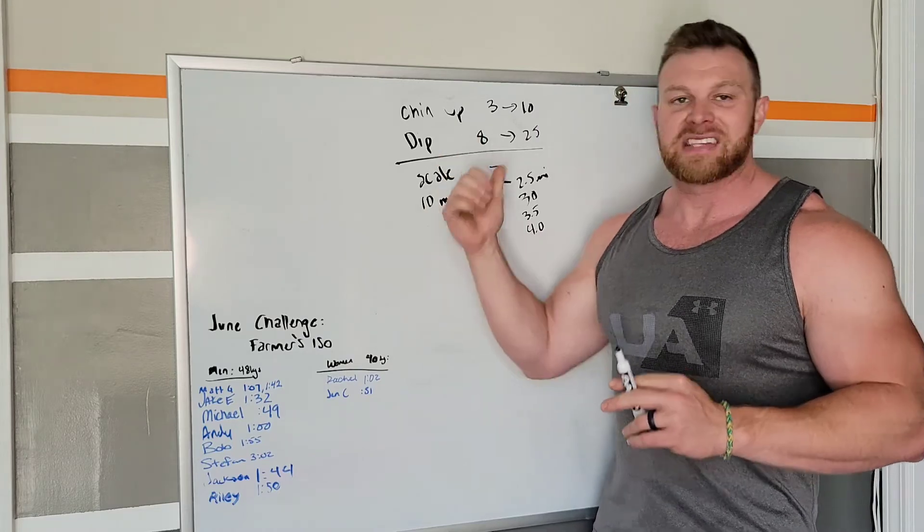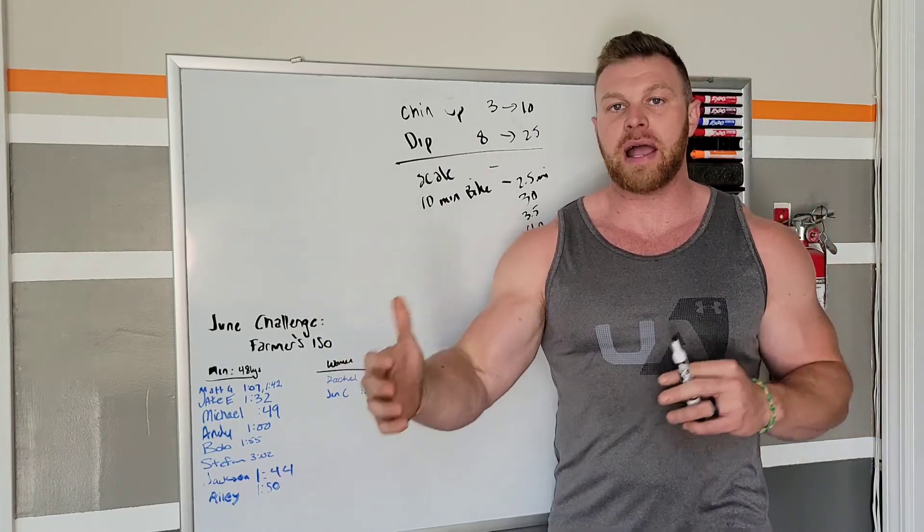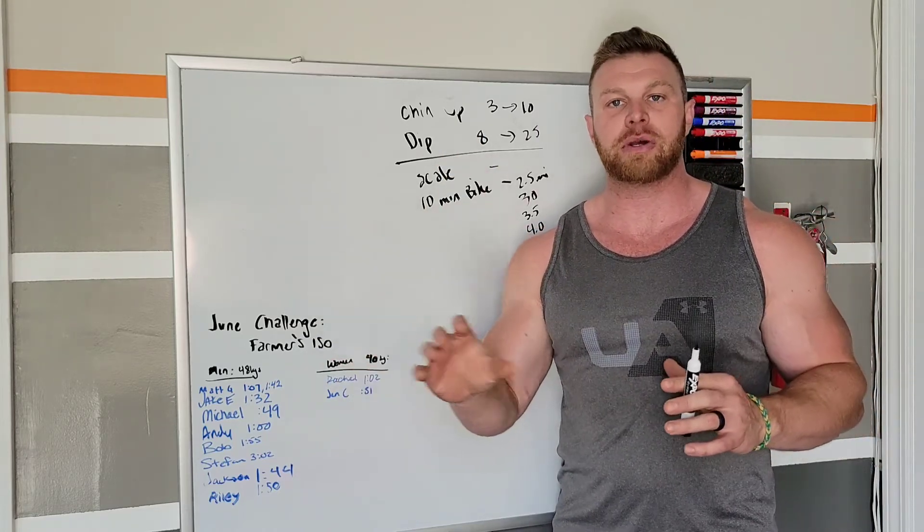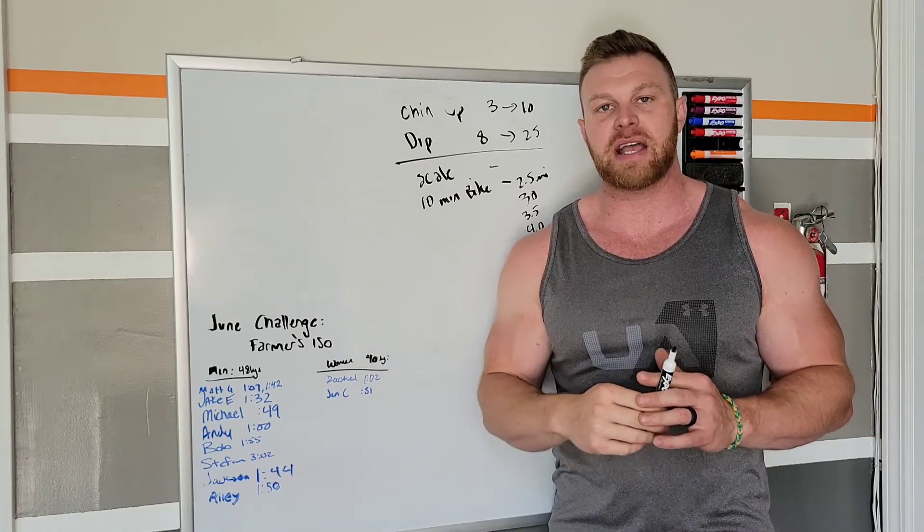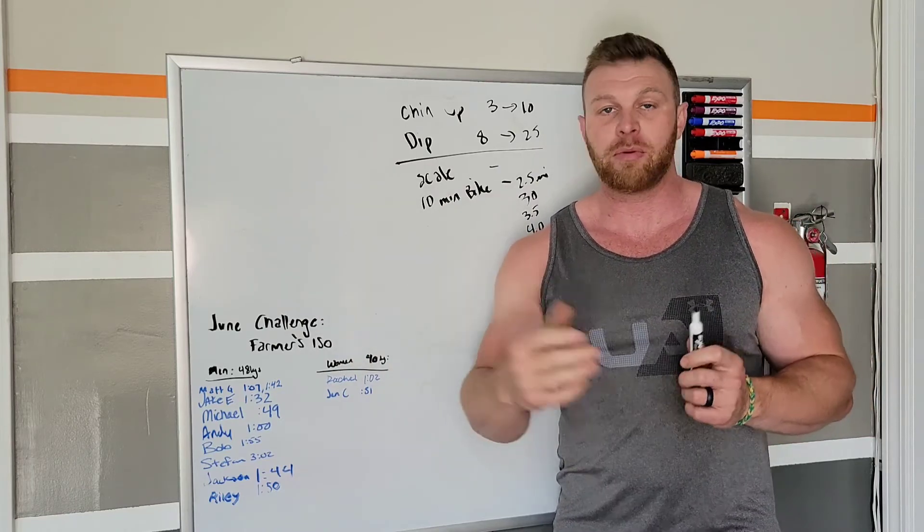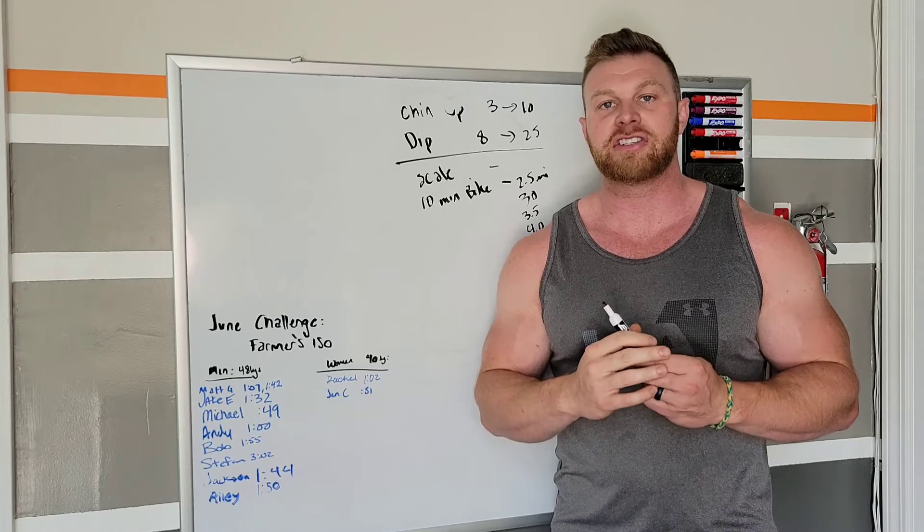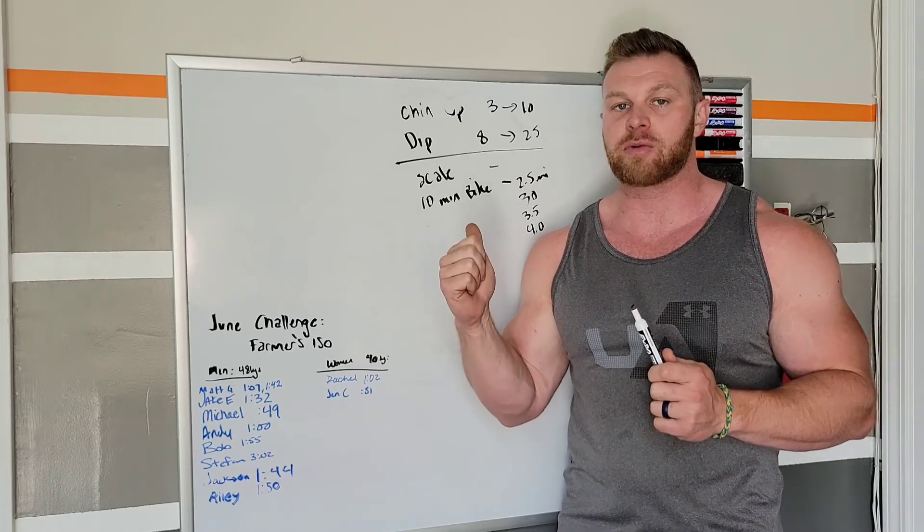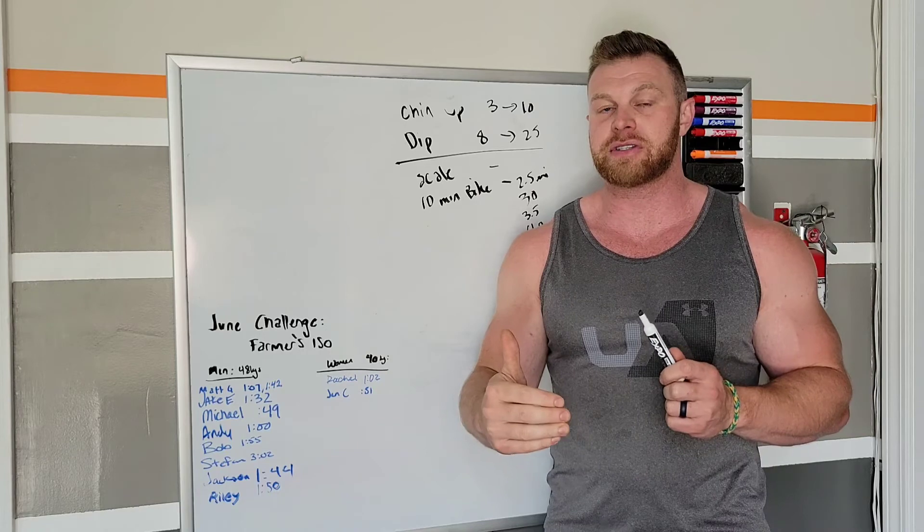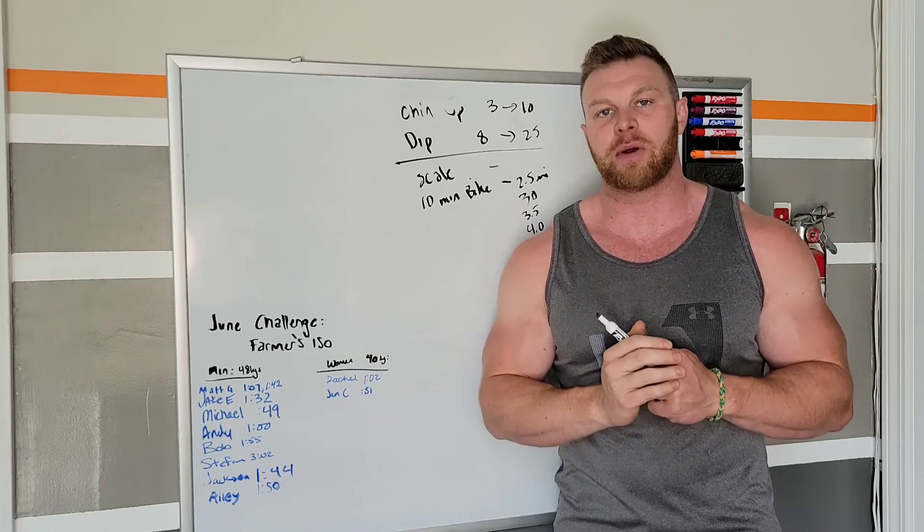Set up some numbers for yourself. See where you're at. Pick whatever your goals are and how you can attribute to it. Then use those numbers to gauge your success along with maybe what the pants size is saying or whatever other things you've been using. Giving yourself some actual numbers to work off of makes these goals easier to stick to. And you know you're actually going somewhere with them.